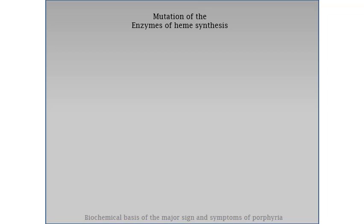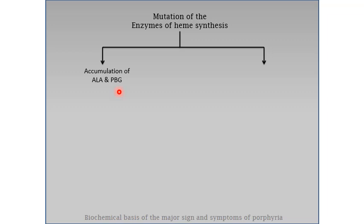What are the biochemical bases for the major signs and symptoms of porphyria? If there is a mutation in the earlier enzymes related to the heme synthesis pathway, that leads to accumulation of delta-aminolevulinic acid and porphobilinogen. This ALA and PBG can lead to various neuropsychiatric signs and symptoms, as ALA can inhibit ATPase enzyme in nervous tissues. Symptoms include anxiety, convulsions, hallucination, and nervousness.